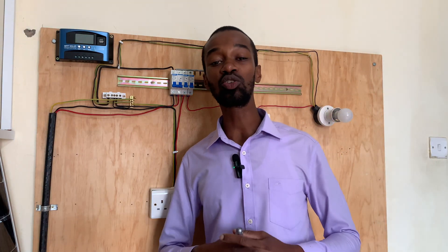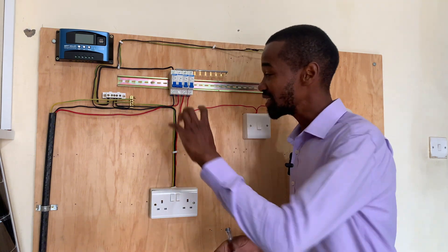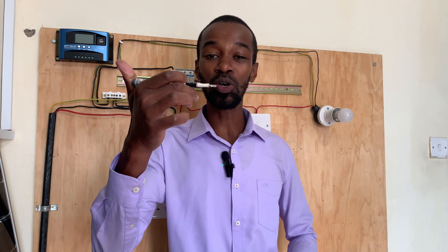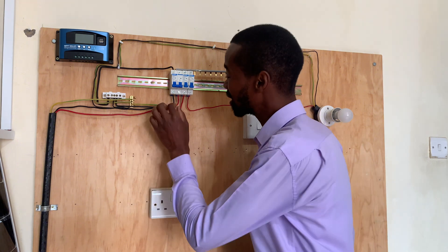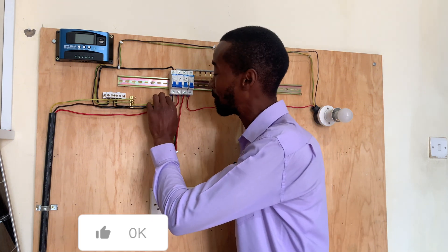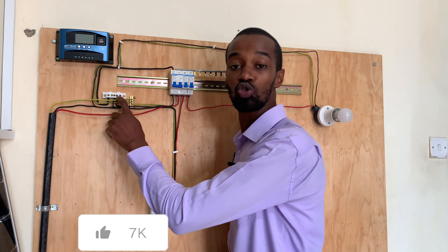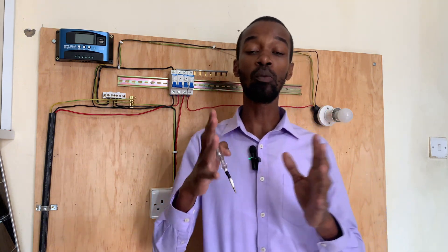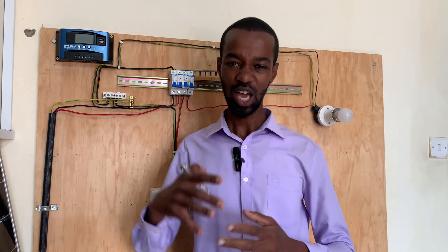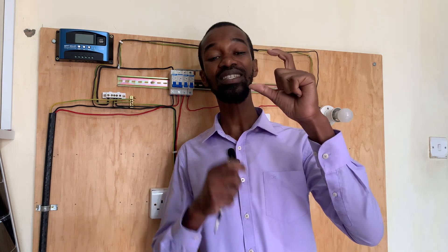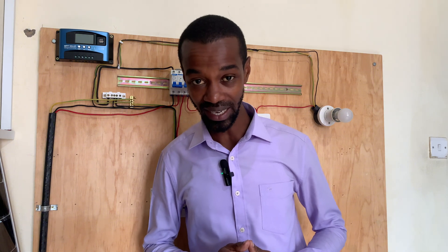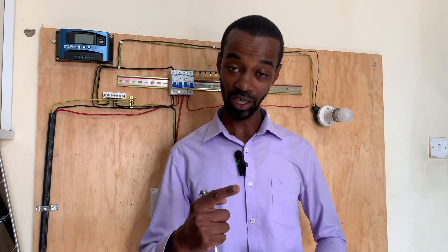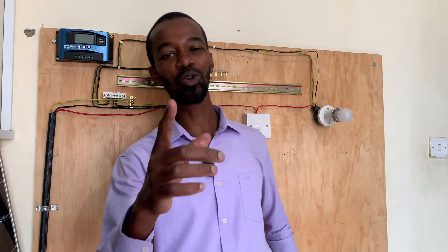A neutral line in any electrical installation is a return path to the source — the source being the transformer. In the event that there is current presence in the neutral line, it simply indicates that there is a loose connection in that entire circuit, be it on the main switch or where you have the neutral bar connecting that particular circuit. In case it is outside the consumer unit, it means it might be in the meter box, the drop cable, or at the point where the drop cable is in contact with the national grid. All of these occurrences may lead to what we refer to as a loose connection on the return path or on the neutral, leading to a floating neutral.